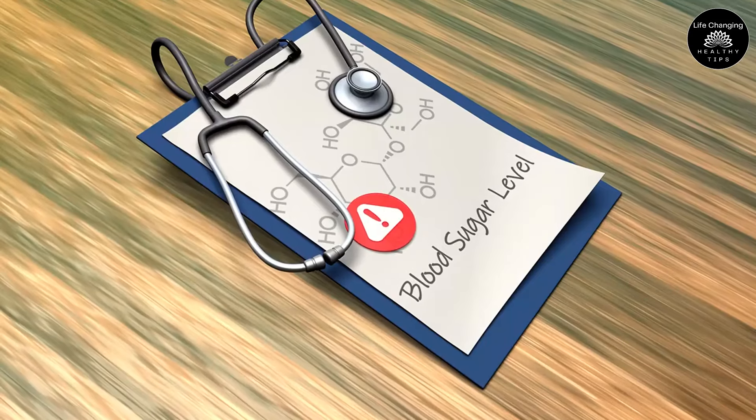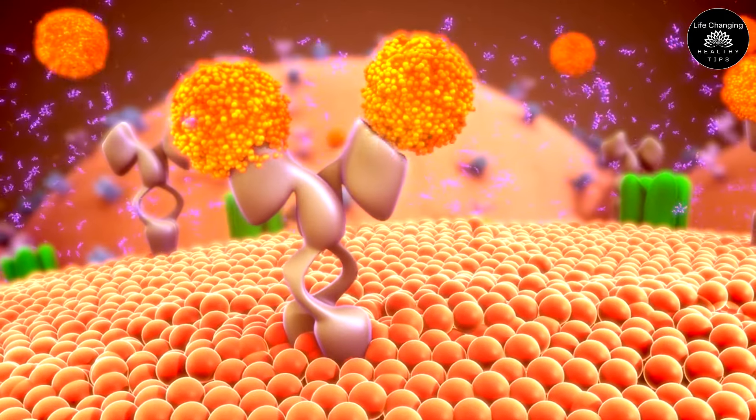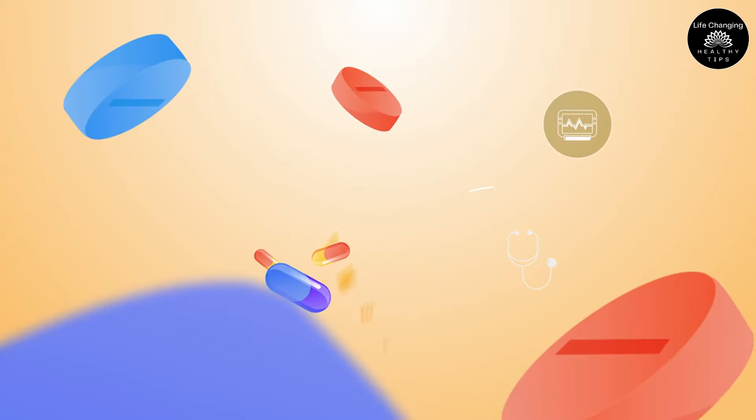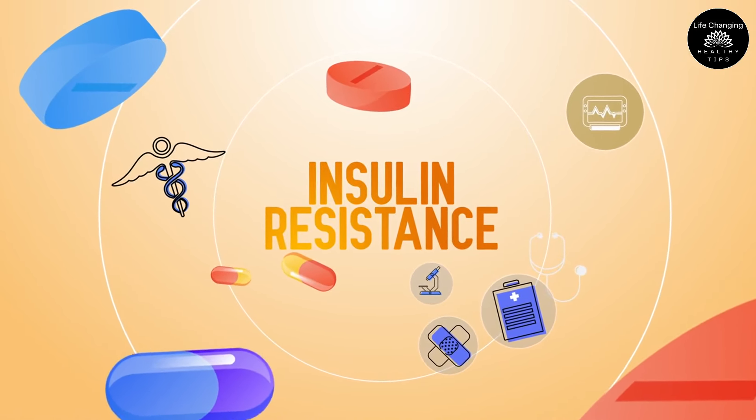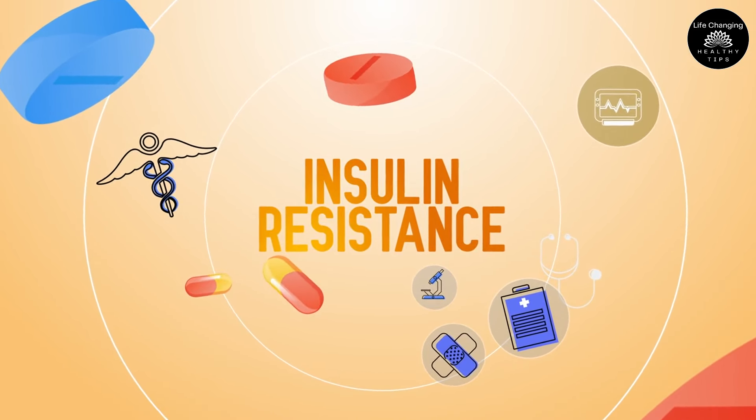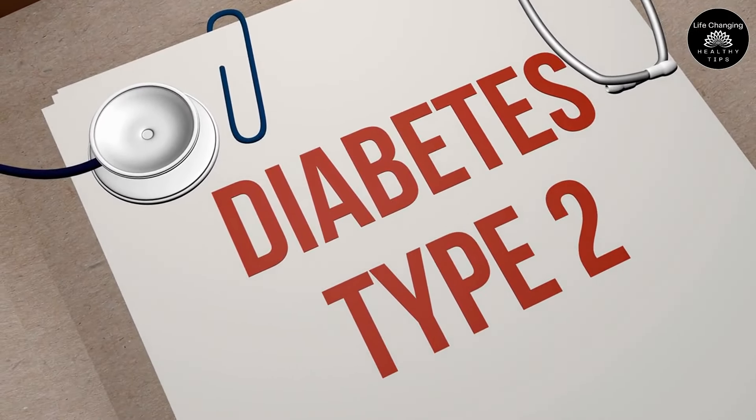By preventing rapid spikes in blood sugar levels, soluble fiber helps maintain insulin sensitivity, allowing the body to utilize insulin more effectively to regulate blood sugar. Moreover, research suggests that individuals consuming diets rich in soluble fiber are less likely to develop insulin resistance, a condition associated with obesity and type 2 diabetes.